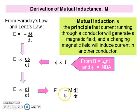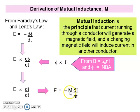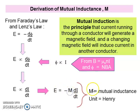If we put an equal sign, we must include a constant. That constant is called M, and M is the Mutual Inductance with the unit Henry.